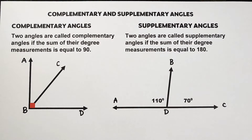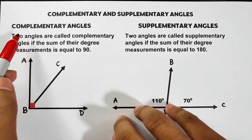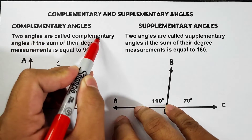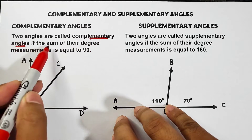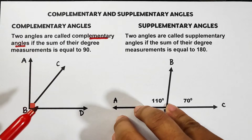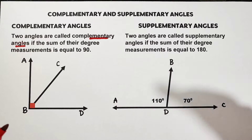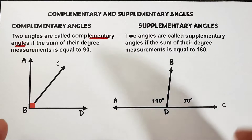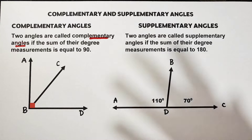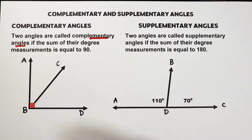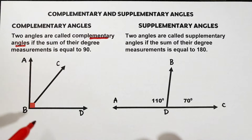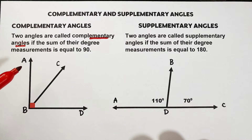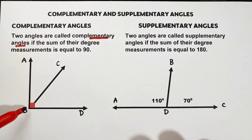Let's define first what is a complementary angle and a supplementary angle. For complementary angles, two angles are called complementary angles if the sum of their degree measurements is equal to 90 degrees. So basically there are two angles in complementary angles, and when you add their angle measures the measurement is equal to the sum of 90 degrees.